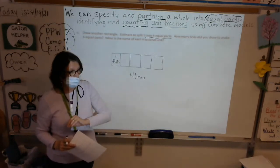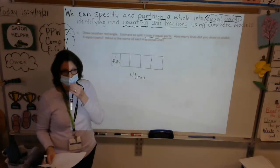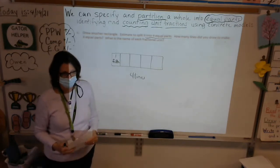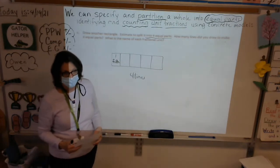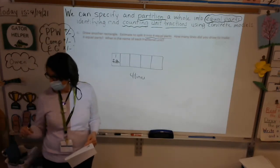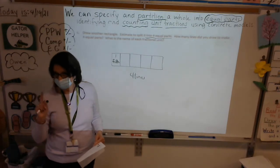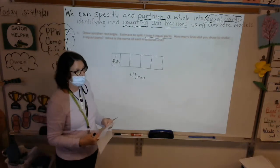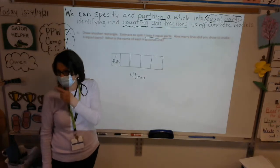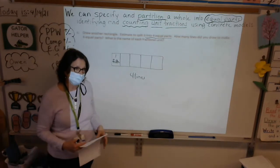So if you need a strip with eight parts, how many lines will you draw? Talk to your B partner — I want eight parts, how many lines? Seven lines. Let's come back together. If you want eight equal parts, you would draw seven lines. Very good, boys and girls.